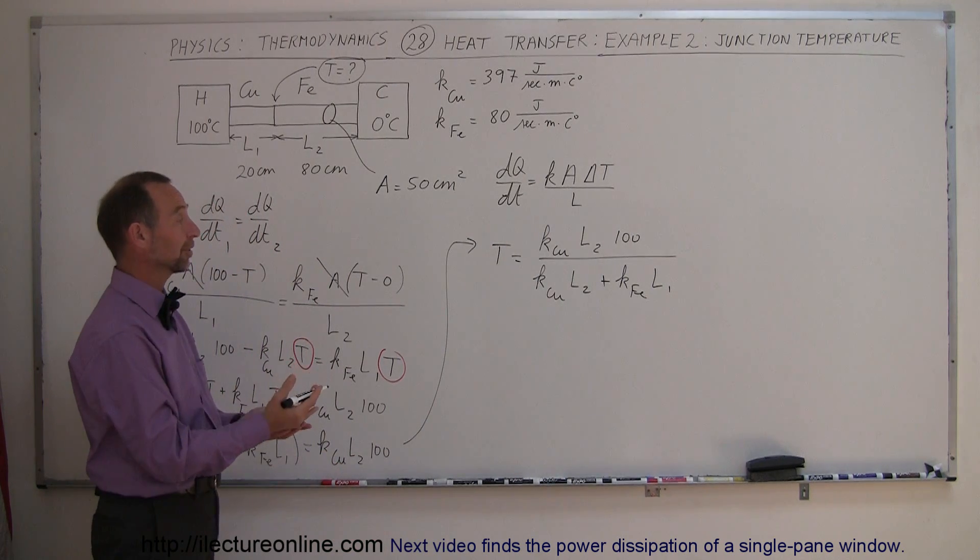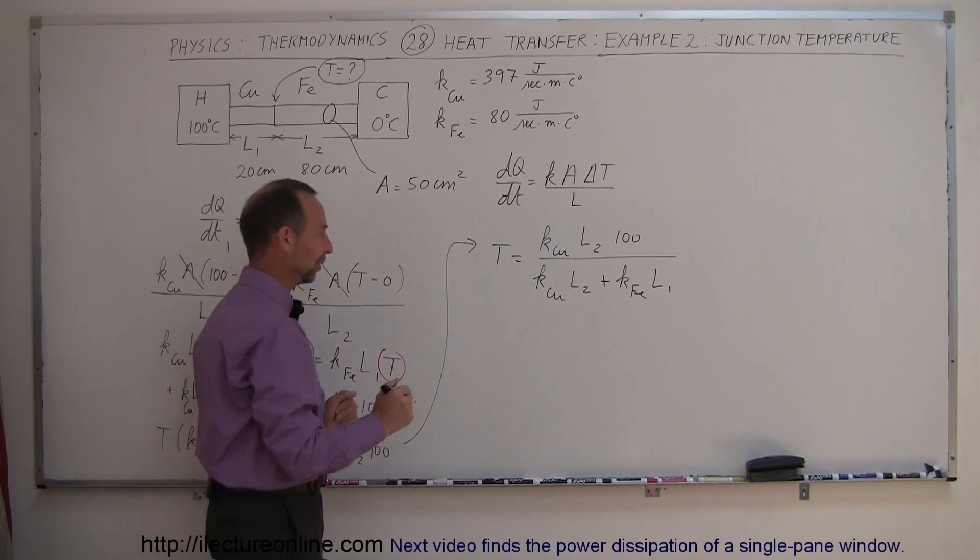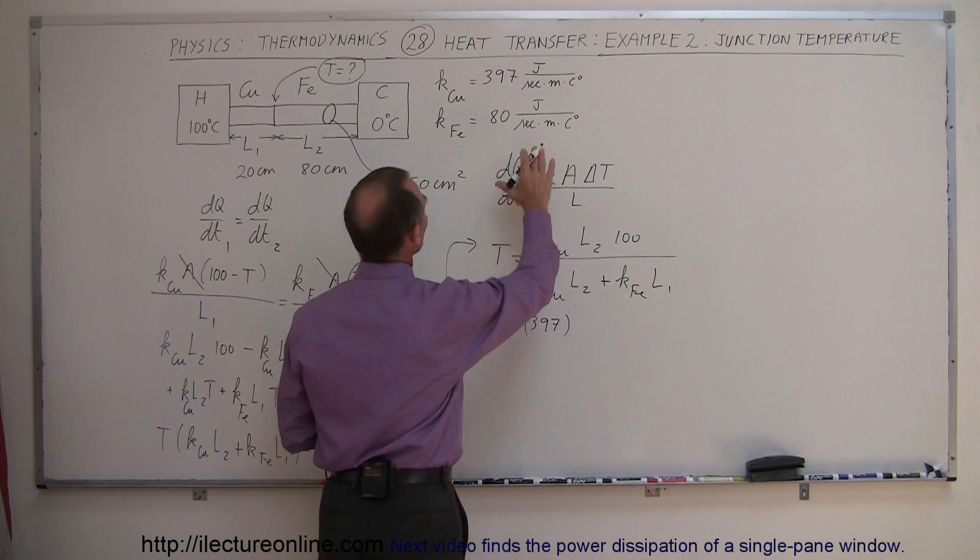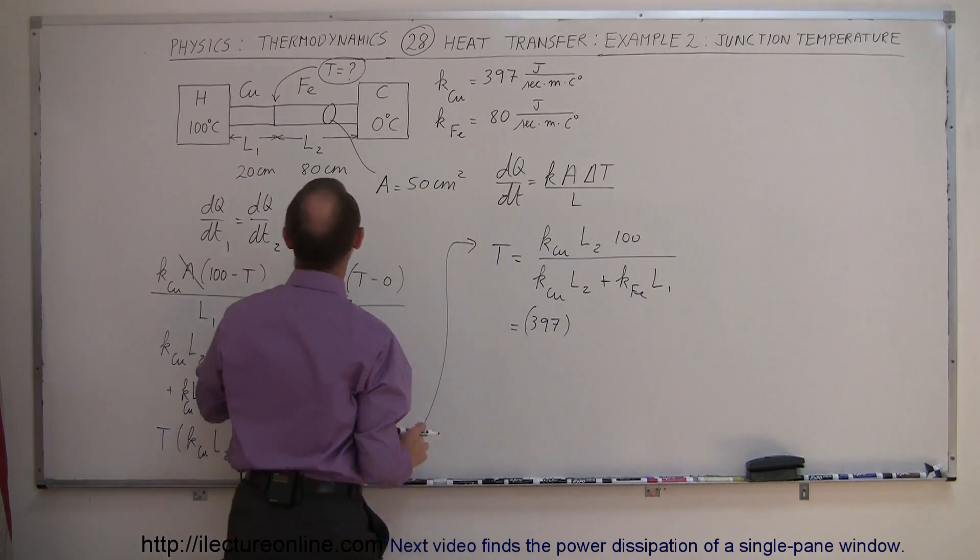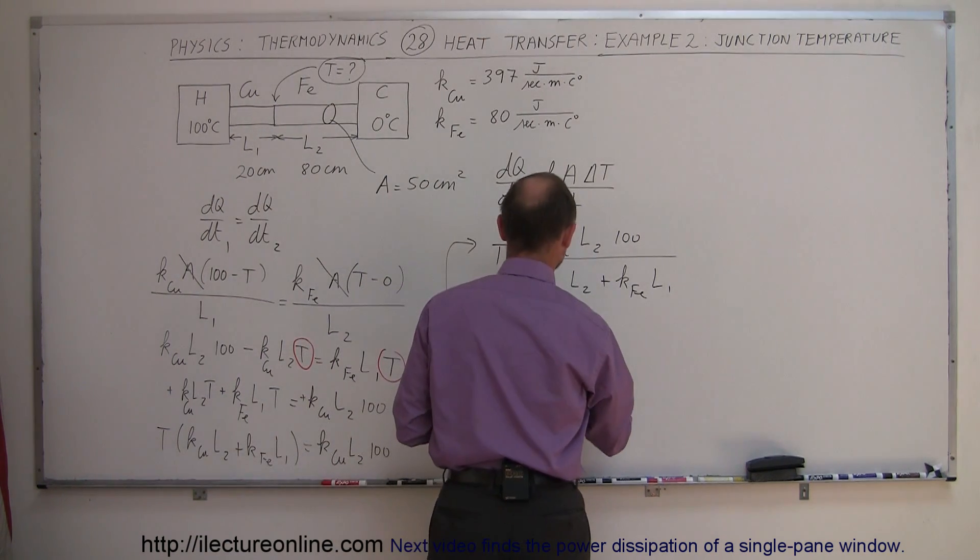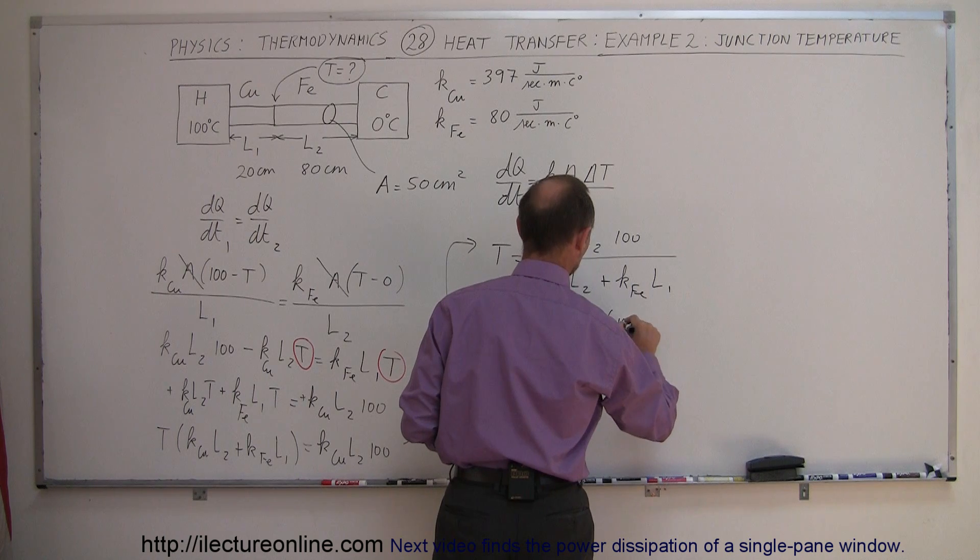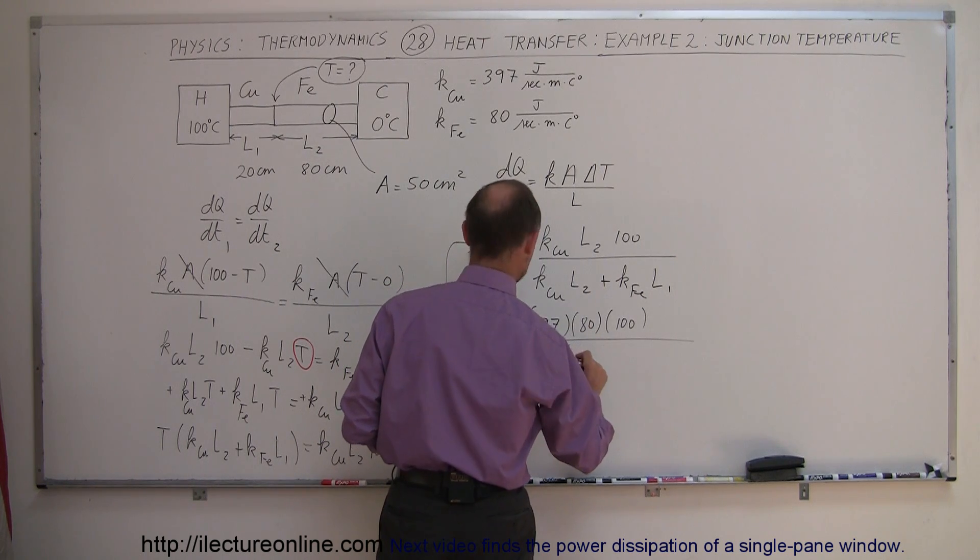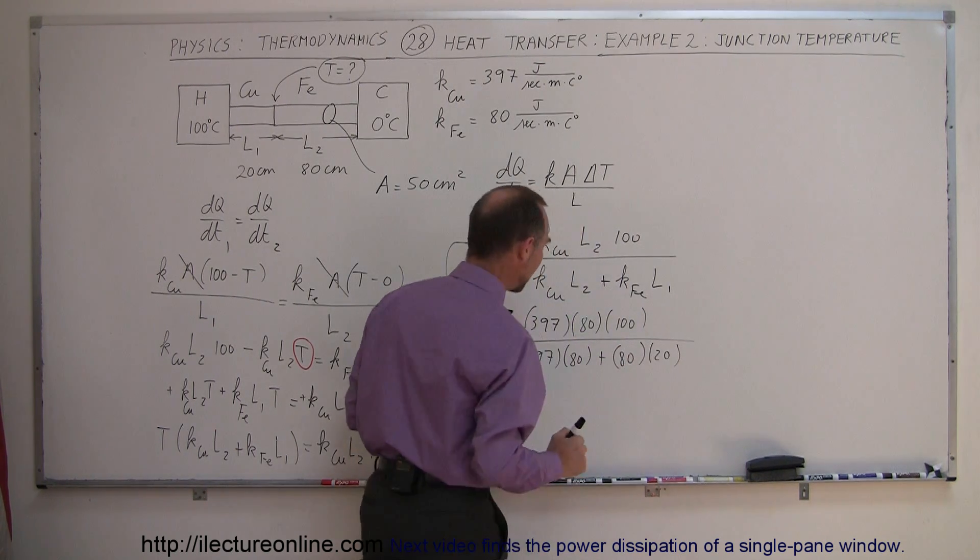All right, now all I have to do here is plug in the numbers, and I'll find out what that junction temperature is T. Hopefully my answer will be somewhere between 0 and 100. If it's not, I will have made a mistake. So let's find out. K of the copper was 397. I'll go ahead and leave off all the units, because we know that this is in centigrade degrees anyway. L2, now notice that we have an L2 in the top, L2 in the bottom, and L1 here. I have that in centimeters, that's okay, the units will cancel out anyway. So we go ahead and L2 would be 80, and right here we have times 100, divided by K of the copper, that's still 397, times L2, which we said was 80, plus K of the iron, which is 80, times L1, which is 20.